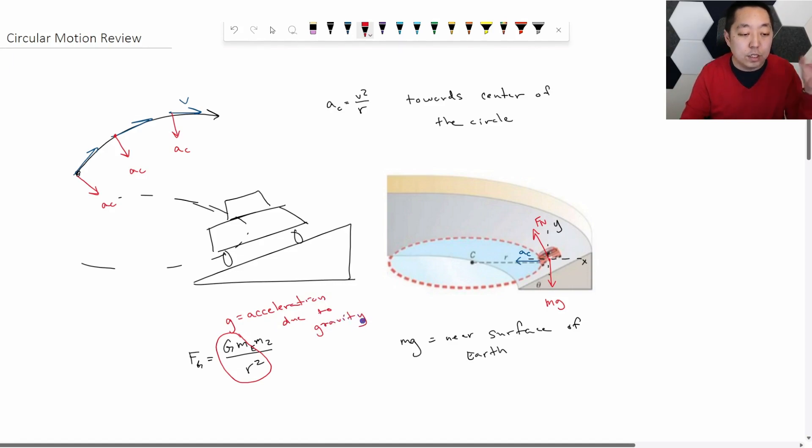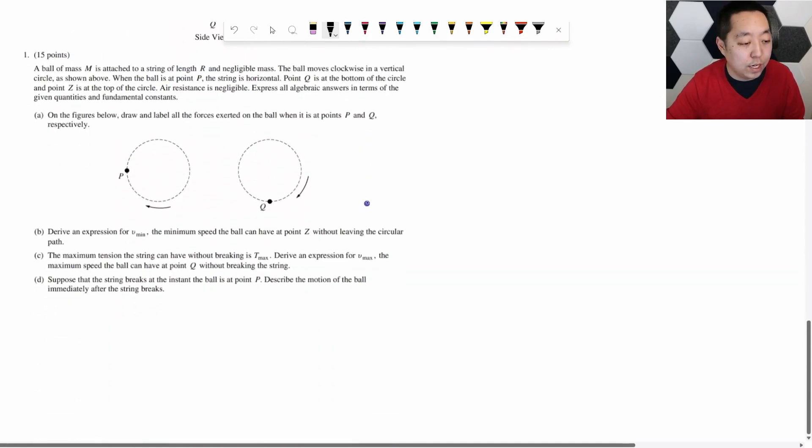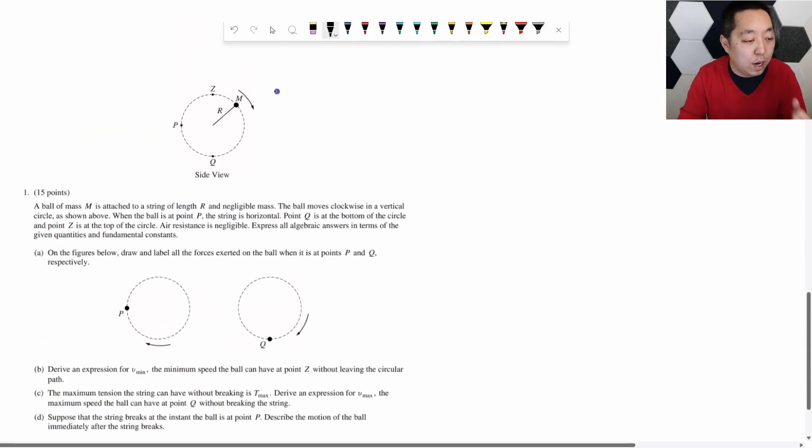So that is everything you need to know for circular motion gravity. Now, let's focus on the hard part for most people which is actually executing the process. Remember, the free body diagram process is not any different. It's the exact same rules for drawing free body diagrams here as it is for anything else. It's not any different just because it's circular motion. So I'm going to do one FRQ here just to illustrate this. We have a ball, mass m on string of length r, negligible mass. The ball moves clockwise in a vertical circle as shown above. When the ball is at point p, the string is horizontal. Point q is the bottom of the circle. Point z is the top of the circle. Figures below, draw and label all the forces exerted on the ball when it's at p and q, respectively.